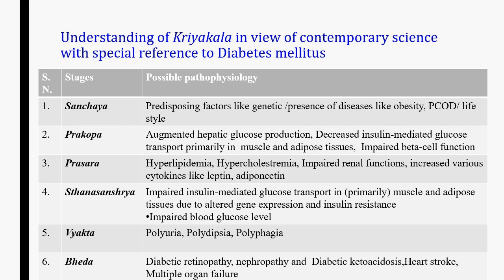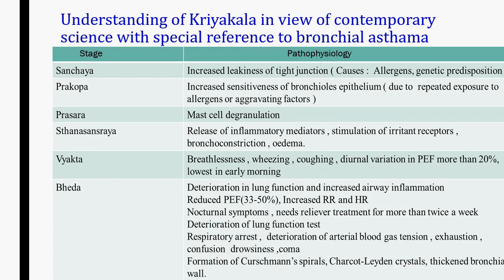Diabetic retinopathy, nephropathy, diabetic ketoacidosis, multiple organ failure, and heart stroke may be considered as stage of complication or Bhed. Kriya Kaal's six stages may also be understood in case of bronchial asthma. In Sanchay stage, there is increased leakiness of tight junctions. In Prakop stage, increased sensitiveness of bronchial epithelium. Prasar means mast cell degranulation. In Sthan Sanchray, there is release of inflammatory mediators. In Vyakti stage, breathlessness, wheezing, coughing, and diurnal variation in PEF. In the Bhed or complication stage, there are nocturnal symptoms, need for relief treatment more than twice a week, respiratory arrest, deterioration of lung function, drowsiness, coma, exhaustion, and formation of Charcot-Leyden crystals.